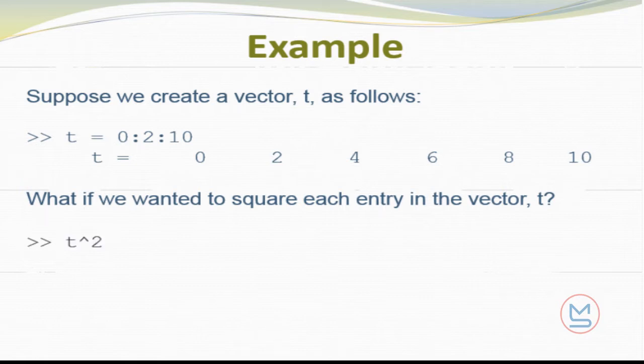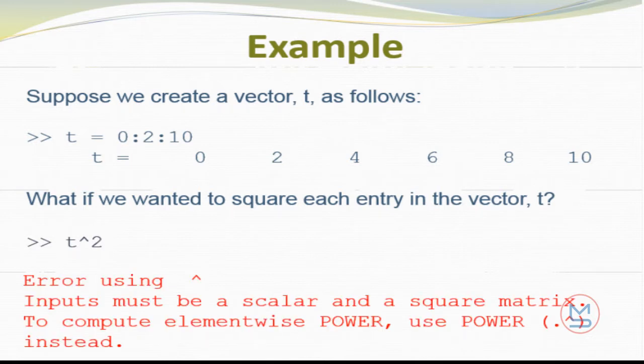Well, most of you, if you haven't had any experience with arrays, might think, I've got this power operator in MATLAB, so I can just do T raised to the second power, and that ought to square each of those entries in the T vector. And if you try this in MATLAB, you'll find out it doesn't work. I get an error statement: Error using the power operator. Inputs must be a scalar or a square matrix. MATLAB goes on to give you a hint: To compute element-wise power, use dot power instead.